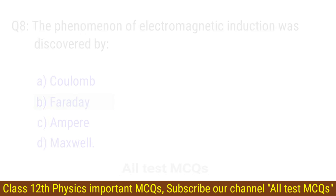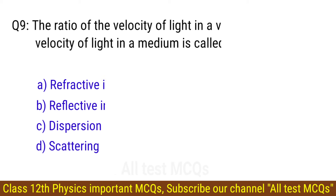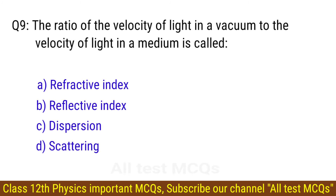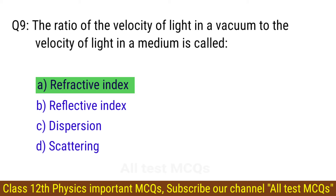Question number 9. The ratio of the velocity of light in a vacuum to the velocity of light in a medium is called? The right answer is option A: Refractive index.